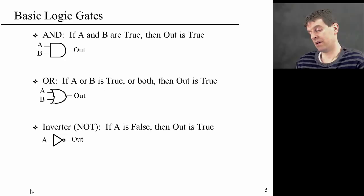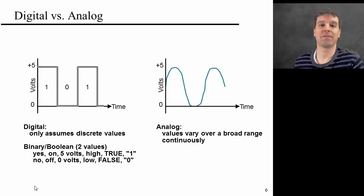Good. So far, so easy. Just to summarize, I've actually introduced these three basic gates. The AND gate, where the output is true if A and B are true. The OR gate, where the output is true if A or B is true, or if both are true. And then the inverter, or NOT gate, where if A is false, then the output is true.